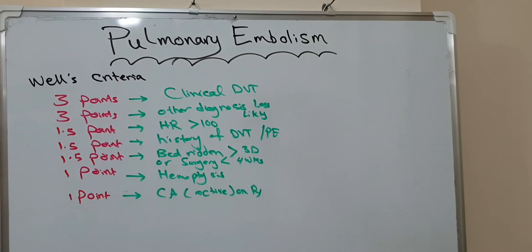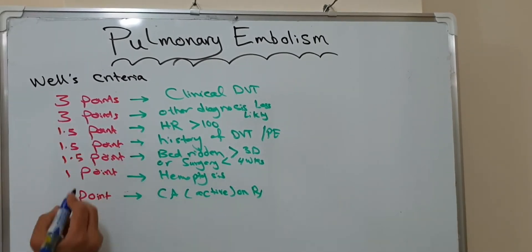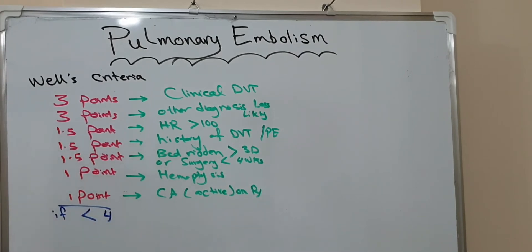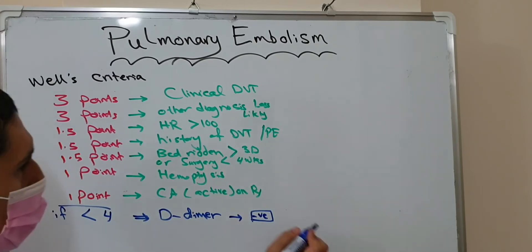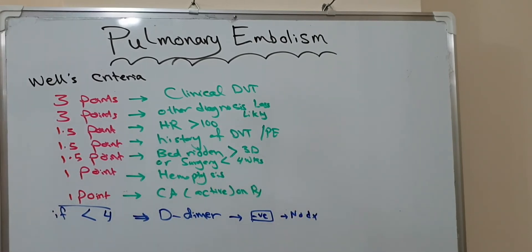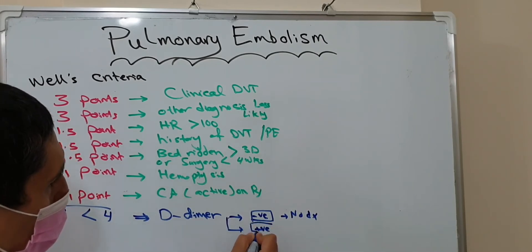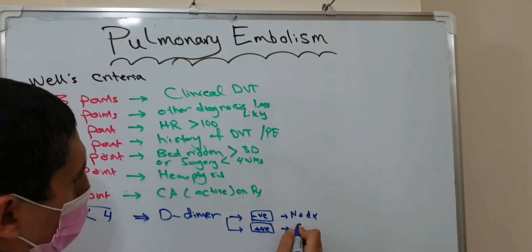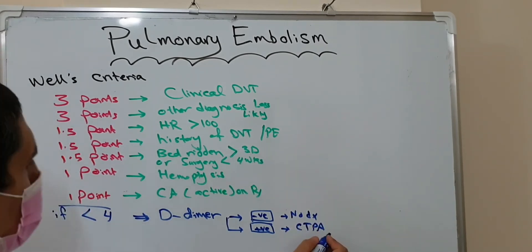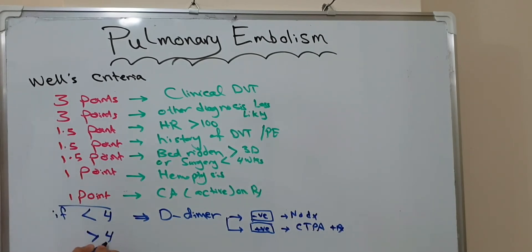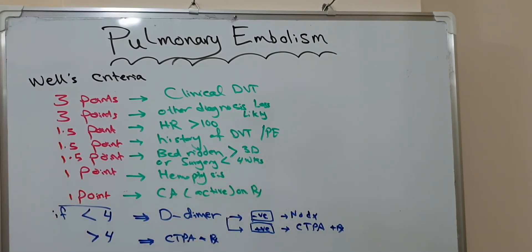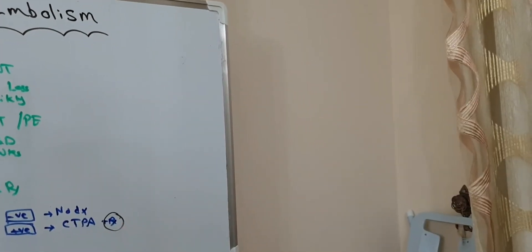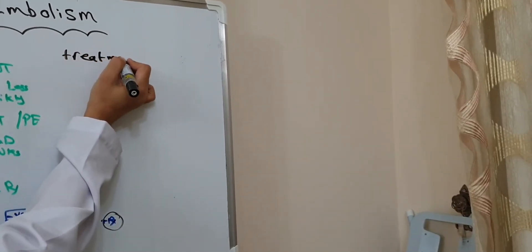Collect the points. If the result is less than four, we send the patient for D-dimer. If D-dimer is negative, we can exclude the diagnosis of pulmonary embolism. If the D-dimer is positive, we send the patient for CT pulmonary angiography and give treatment according to severity. If Wells criteria points are more than or equal to four, we go directly to CT pulmonary angiography and give treatment.